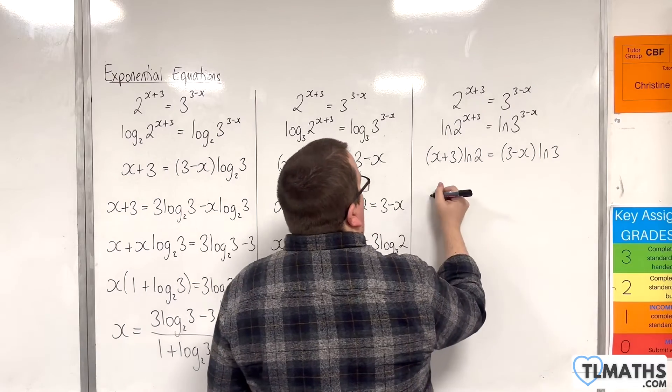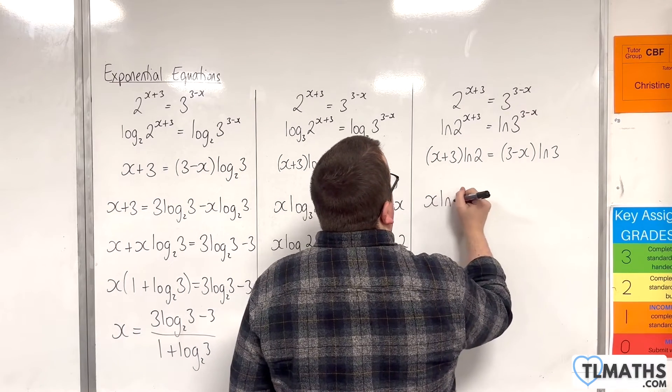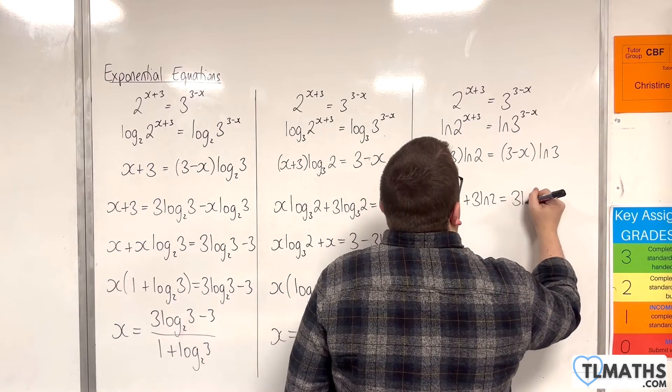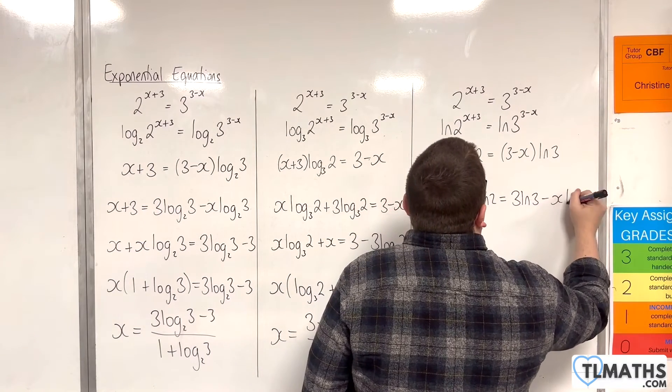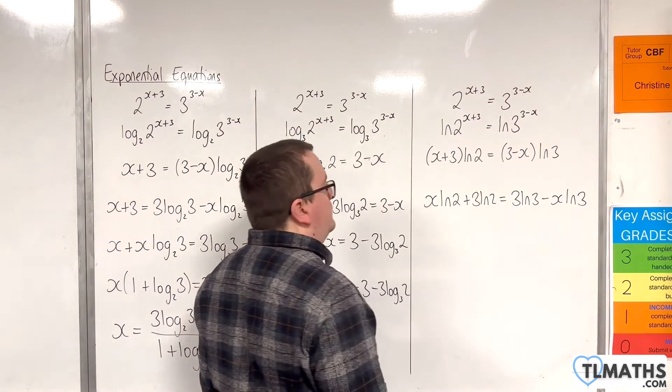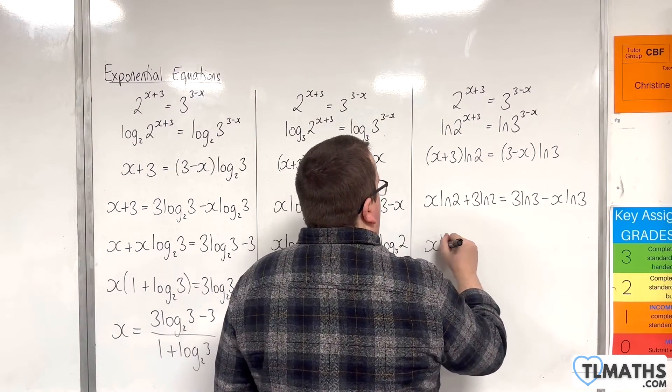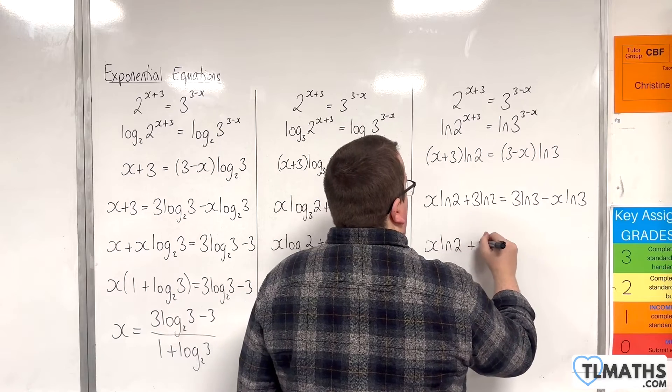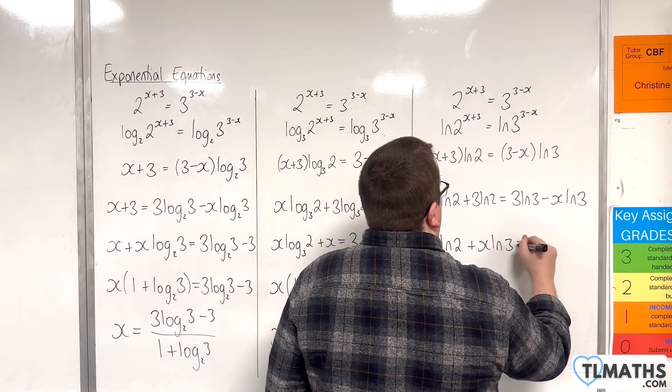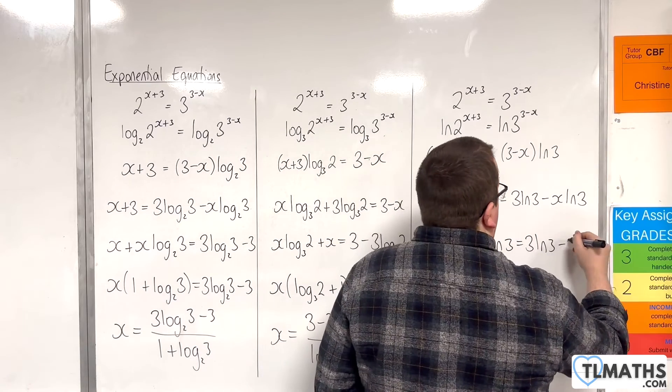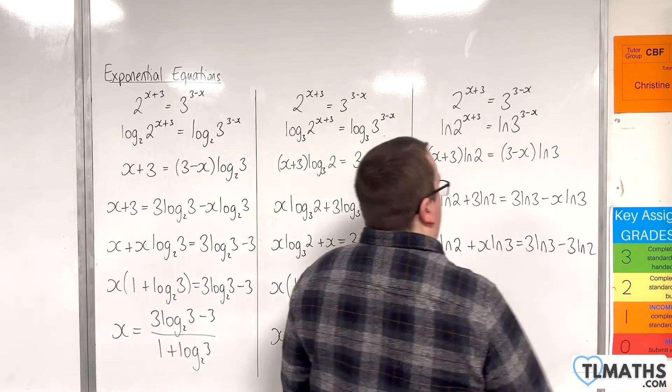Now we need to expand the brackets, so x log 2 plus 3 log 2 is 3 log 3 take away x log 3. Let's move all the x's onto the left hand side, so x log 2 plus x log 3 is 3 log 3, and we're subtracting 3 log 2 from both sides, like so.